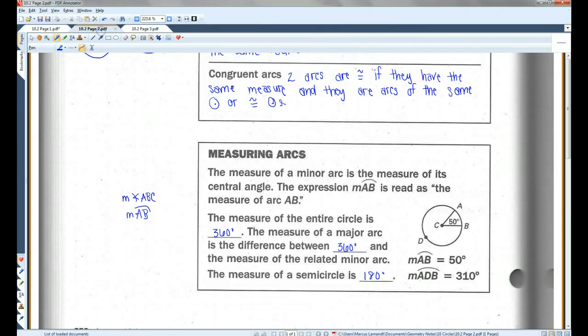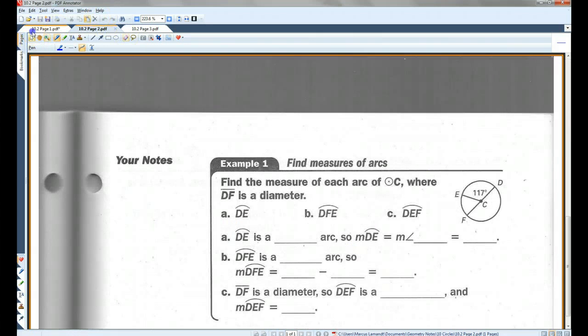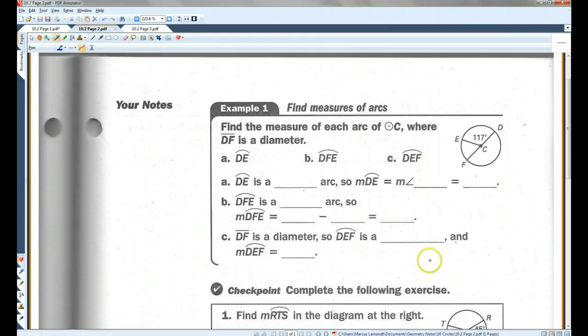Page 2. Make sure we didn't miss anything. Example 1. Find the measure of each arc of circle C where DF is a diameter.